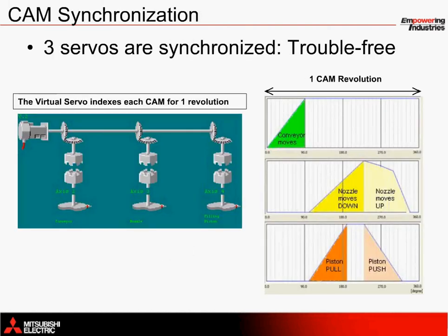A closer look at these cam profiles helps to illustrate what's happening behind the scenes. The conveyor axis, axis number 2, uses a feed cam profile to index the conveyor for one-fourth of its entire rotation. For the rest of the profile, even though the cam itself is rotating, the servomotor does not move. This is because the profile has already reached 100% of its stroke setting.